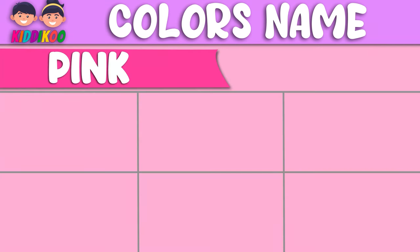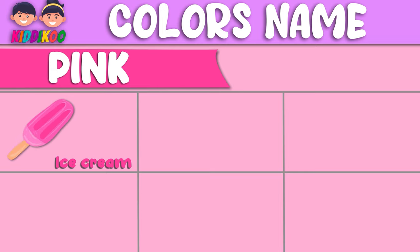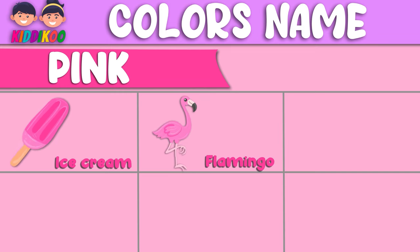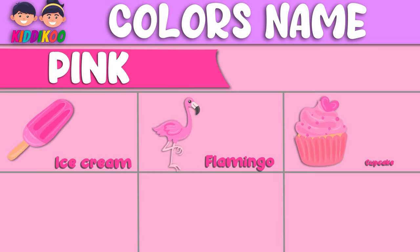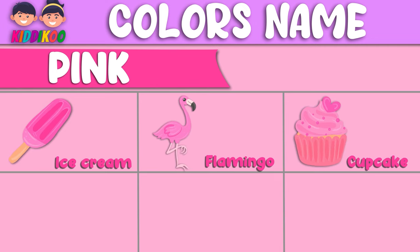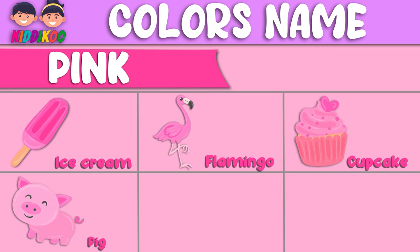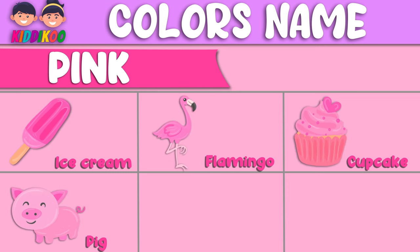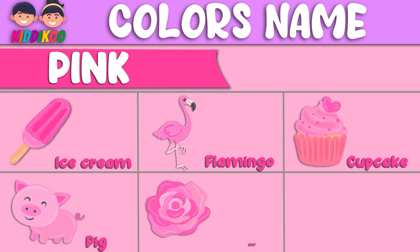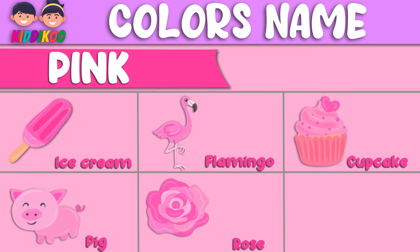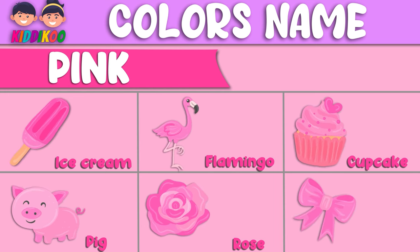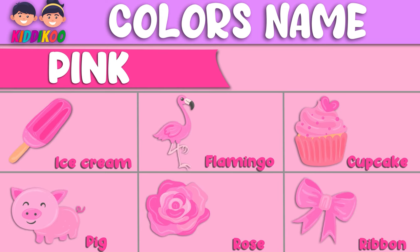This color is pink. Ice cream — this ice cream is pink. Flamingo — this flamingo is pink. Cupcake — this cupcake is pink. Pig — this pig is pink. Rose — this rose is pink. Ribbon — this ribbon is pink.